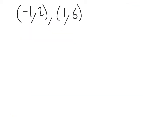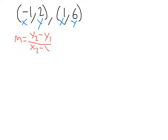Alright, so now in this problem we have two points: negative 1, 2 and 1, 6. So first we have to find the slope. To find slope, you have to put it in this formula: m equals y2 minus y1 over x2 minus x1.